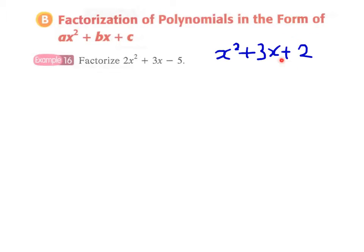We have to decompose the last constant term into two factors and then write the factors in a vertical format, like x + 2 multiplied by x + 1. When we cross multiply it we can get the